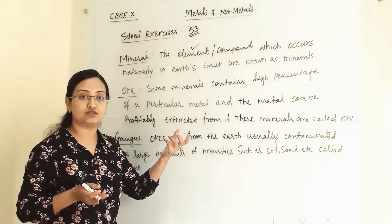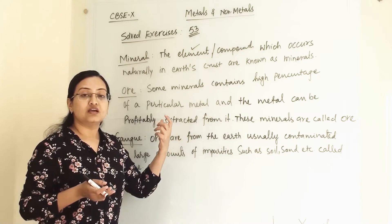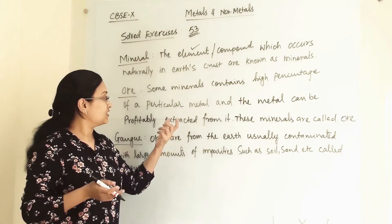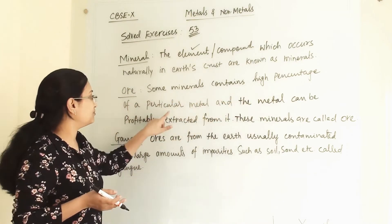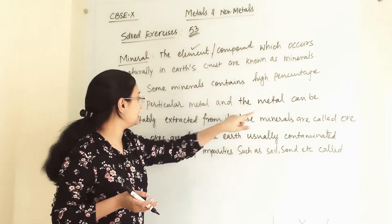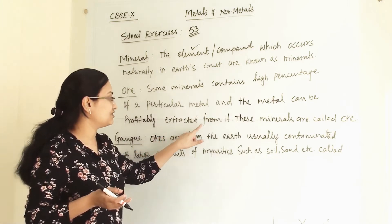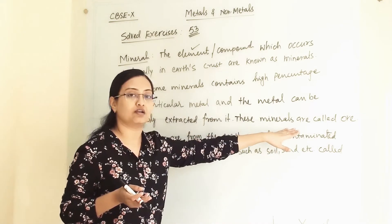We have discussed that bauxite ore which is ore of aluminum. So some minerals contain high percentage of a particular metal and the metal can be profitably extracted from it. These minerals are called ore.